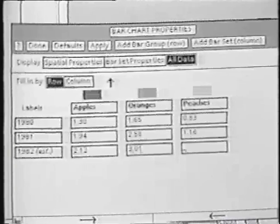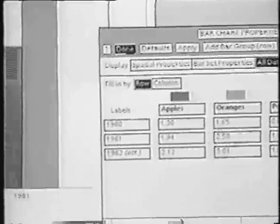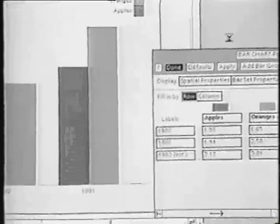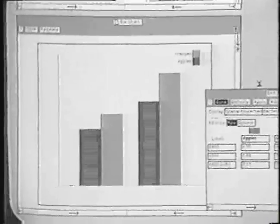We can also add another year to the bar chart by adding a new row to the table. Type in the year and the new data. When we select done, the bar chart reformats itself to add the new data, the row and the column, while still occupying the same amount of space on the screen and in the document.